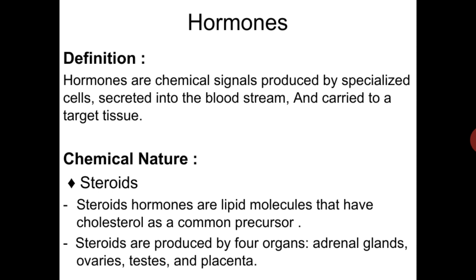Steroids are produced by four organs: the adrenal gland, ovaries, testis, and placenta.